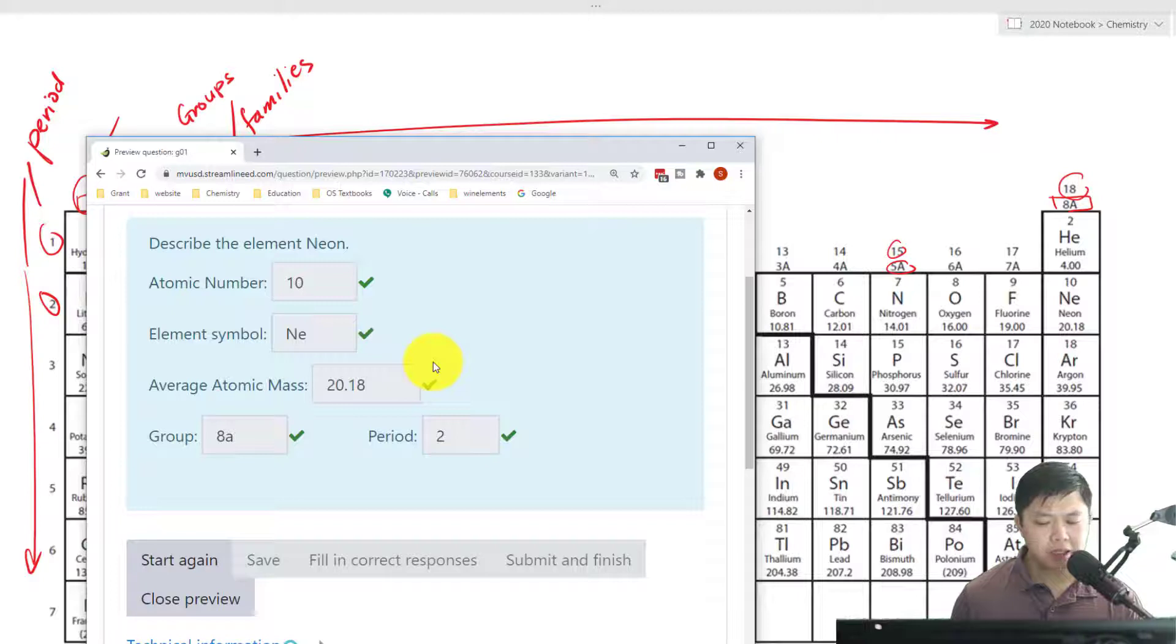One last important piece of information is that all the atoms of all the elements on the periodic table are neutral. That means the number of protons is equal to the number of electrons. So again, all the atoms on the periodic table are considered neutral. That's why the number of protons equals the number of electrons, and we don't see any charges here.